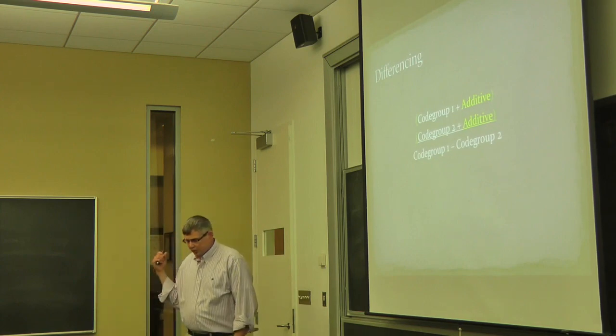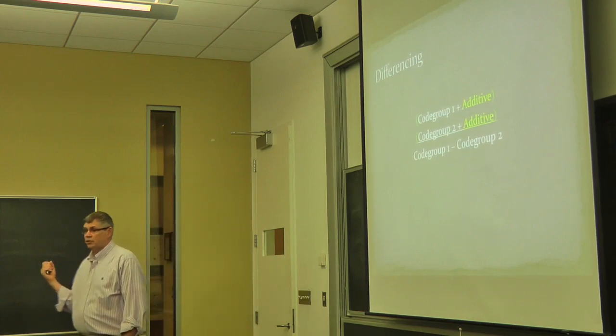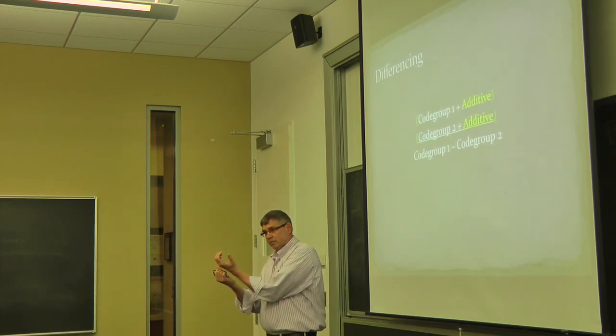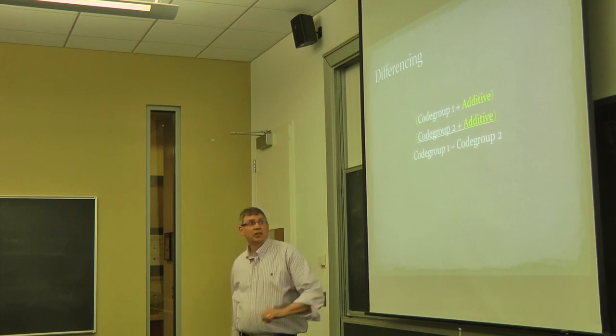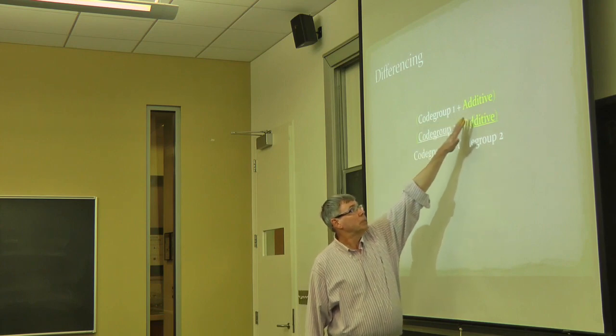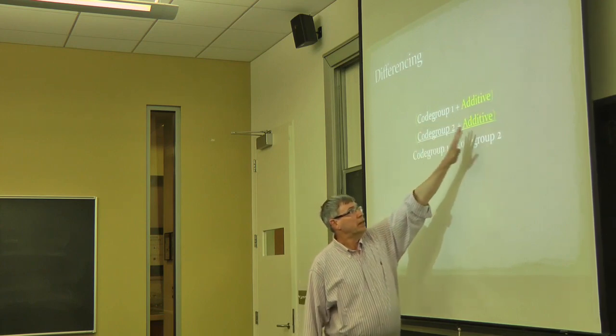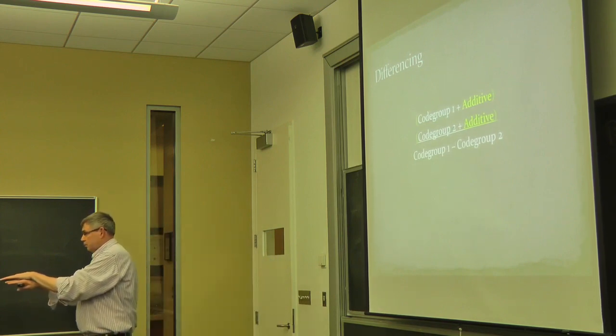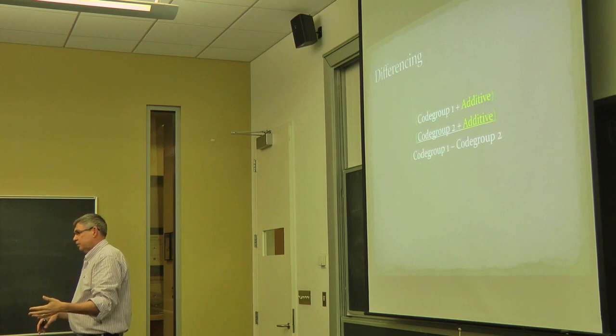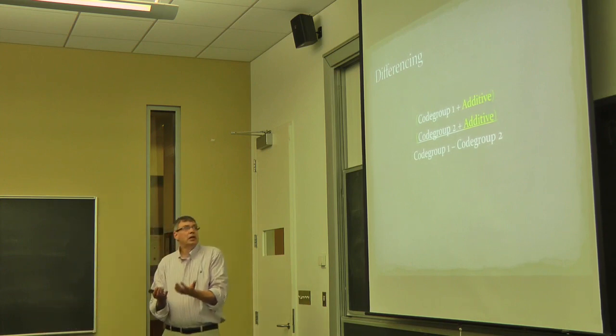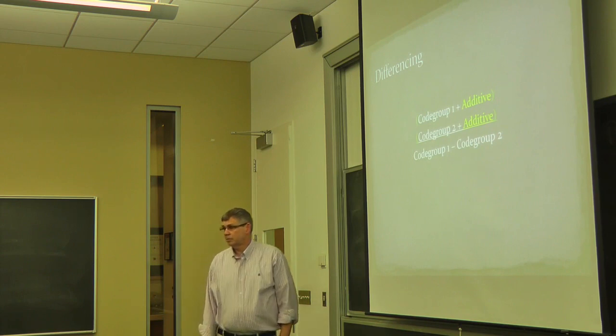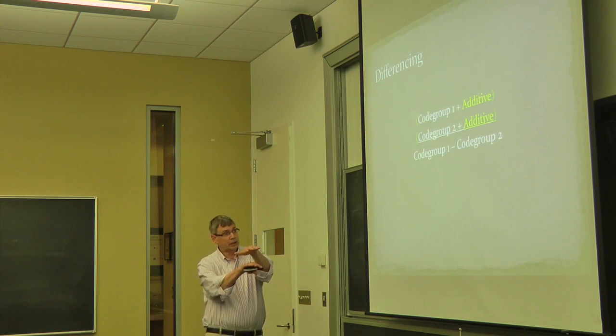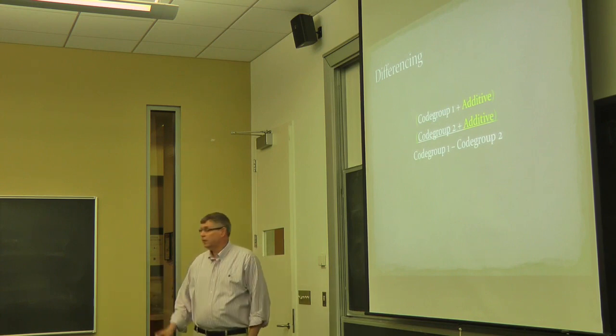So knowing that, we can use a technique called differencing. And this is one of the most important techniques used by the code breakers. If you grab two of these transmitted code groups out of a column, they've been encrypted by the same additive. So one will be a code group plus an additive. The other will be a code group plus the same additive. So if you take two of the transmitted groups and subtract them, you're going to strip off the additive. Now, you're not going to get the underlying code group. You're going to get the difference of two of them. Does that make sense? So if you can take two groups out of a column of depth and subtract them, what you get is the difference of two valid code groups.